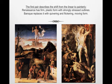To aid our discussion on the five concepts, we will view two paintings of the Resurrection. The painting on the left was completed in 1479 by Renaissance painter Giovanni Bellini. The painting on the right was completed in 1612 by Baroque painter Peter Paul Rubens.